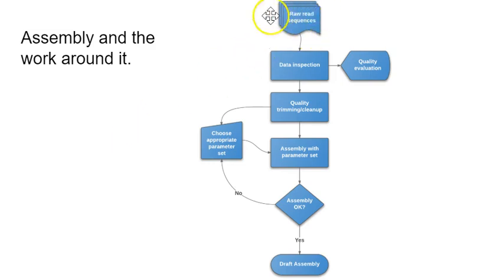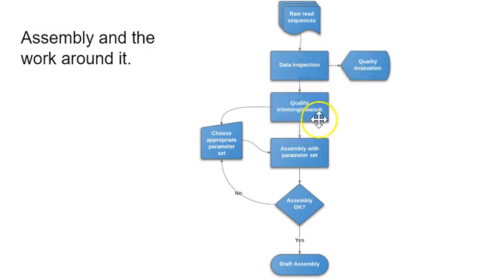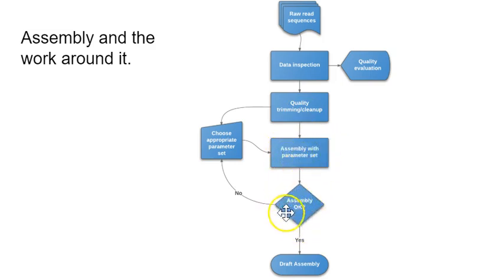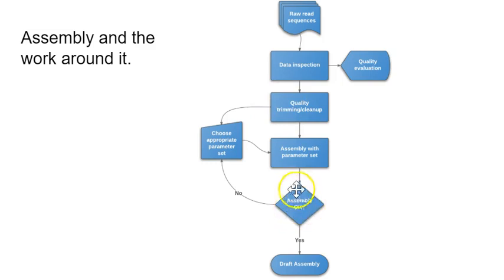In a genome project, once you get your raw reads from the lab, you can then inspect that data and do some quality evaluation. We'll talk later about a tool called FastQC to do that. You can then take the data and do some quality trimming and cleanup, and then feed it into an assembler. You can ask whether the assembly is okay. If the answer is no, it might be that you need to go back and question how you did the quality trimming and cleanup stage. If the assembly is not good, you don't want to proceed with your analytical pipeline.